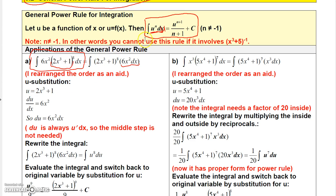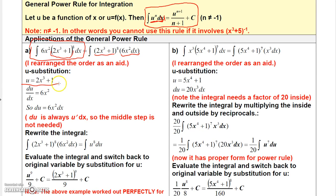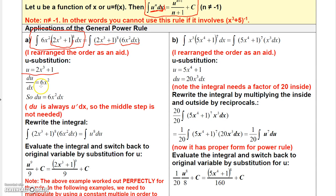Let me show you how you figure out what du is. If we claim that u is the expression 2x cubed plus 1, then the derivative of u with respect to x must be 6x squared. But I don't want du over dx — I want du. So let me multiply both sides by dx, and I'll get du equals 6x squared dx. Now, if you look at this, this is du. So this up here is u to the 8th, and then this beside it is du.